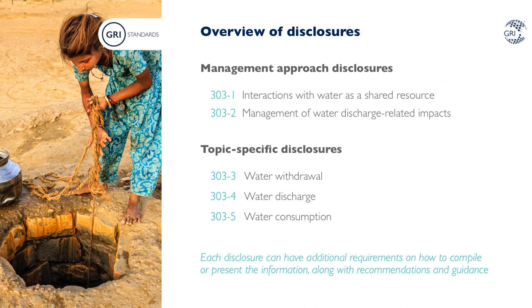Here is an overview of all the disclosures included in the new Water and Effluence standard. There are two disclosures for an organization to explain its management approach towards water and effluence, including qualitative information to understand how an organization interacts with water and manages any associated impacts. There are also three topic-specific disclosures to report on key elements of performance and impact from water use, covering water withdrawal, water discharge and water consumption. Each disclosure can have additional requirements on how to compile and present the information, along with recommendations and guidance.